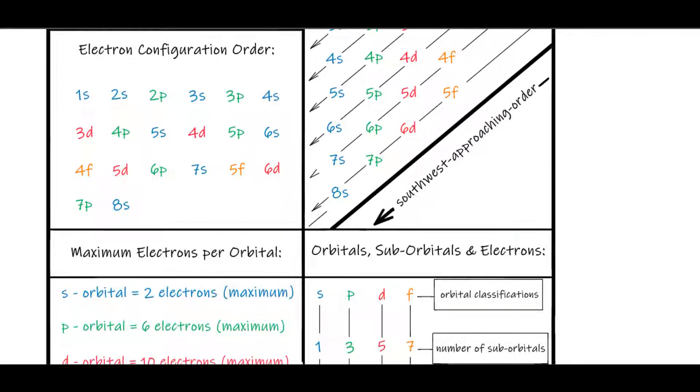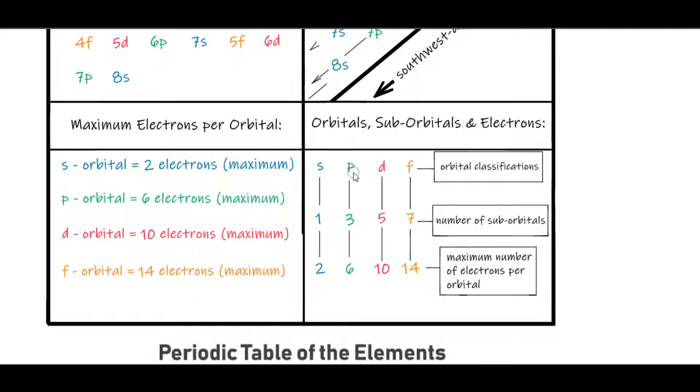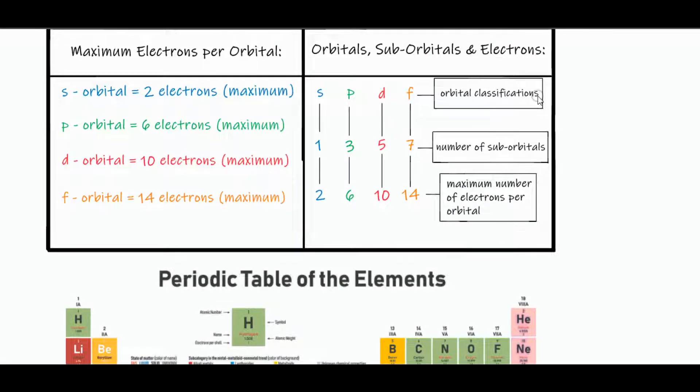Next is to go to this chart here, and we see S, P, D, F, and it's 1, 3, 5, 7. So you could write 1, 3, 5, 7 up here as well.